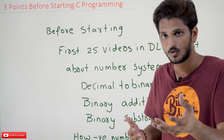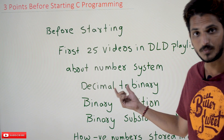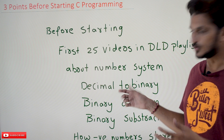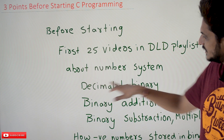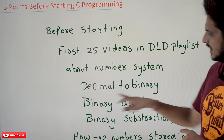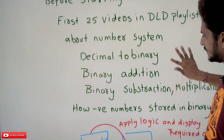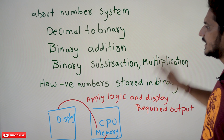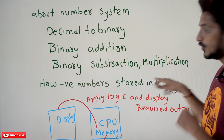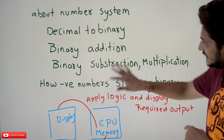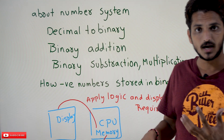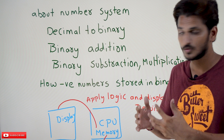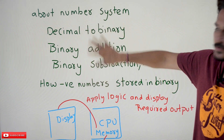As a beginner in computer science, you may not have any idea about binary number systems. Those videos explain decimal to binary conversion, binary addition, binary subtraction, binary multiplication, and how negative numbers are stored in binary format. These concepts will help you a lot in understanding C programming, so finish them before starting C programming.